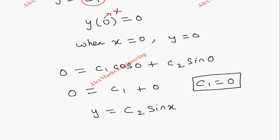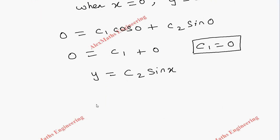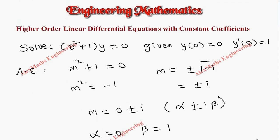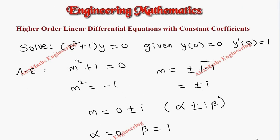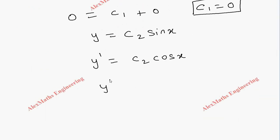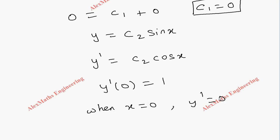Using one condition, we got the value of the constant c1 as 0. Now, to use the other condition, it is y′(0) = 1, which means we need the derivative. So y′ = c2·cos(x). The condition y′(0) = 1 indicates that when x = 0, y′ = 1.